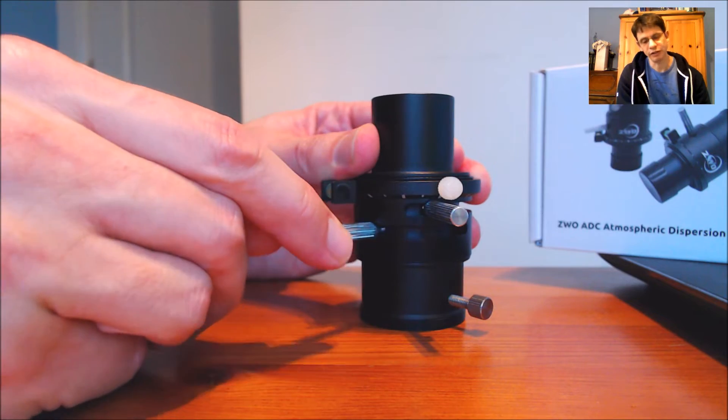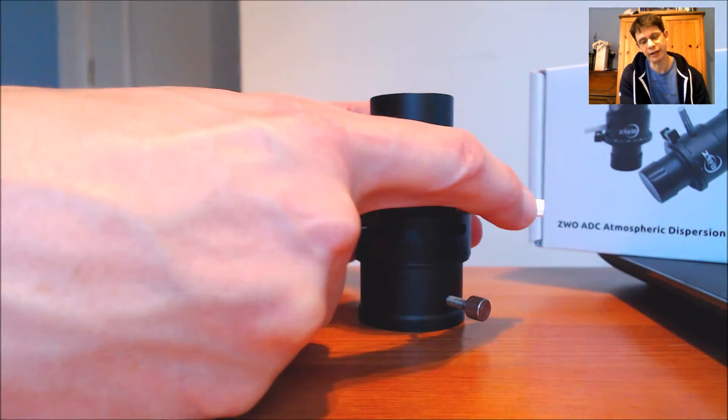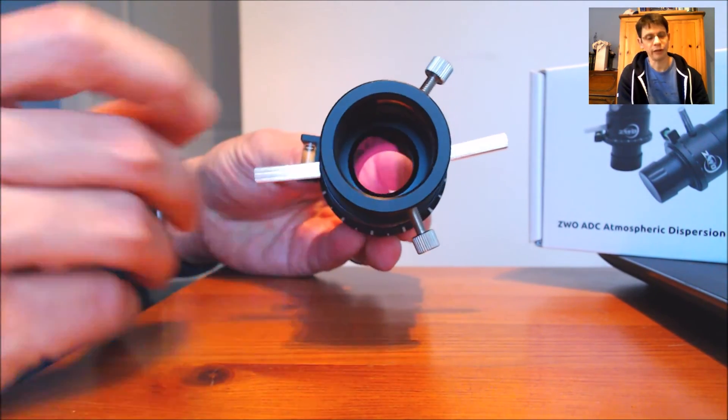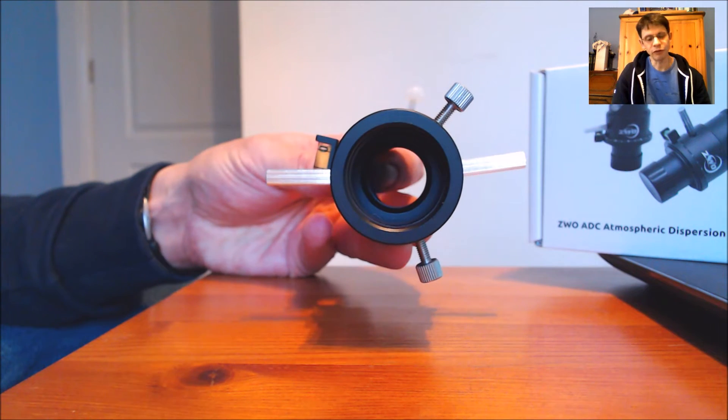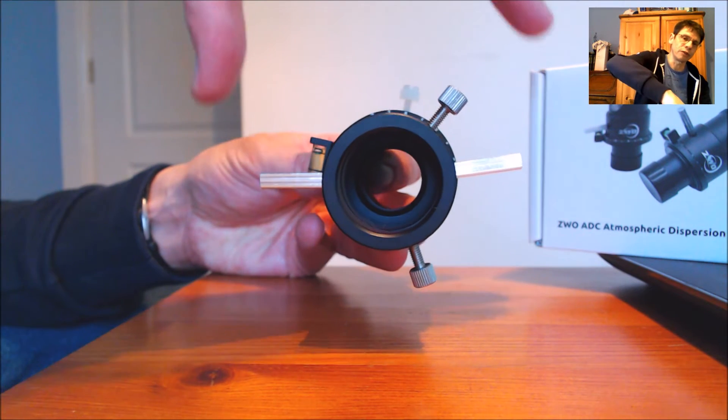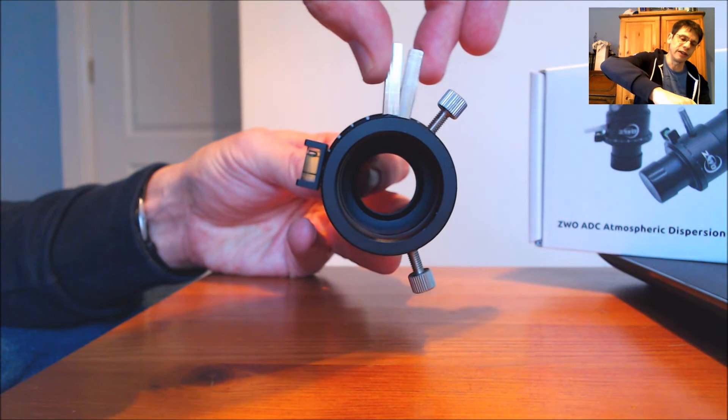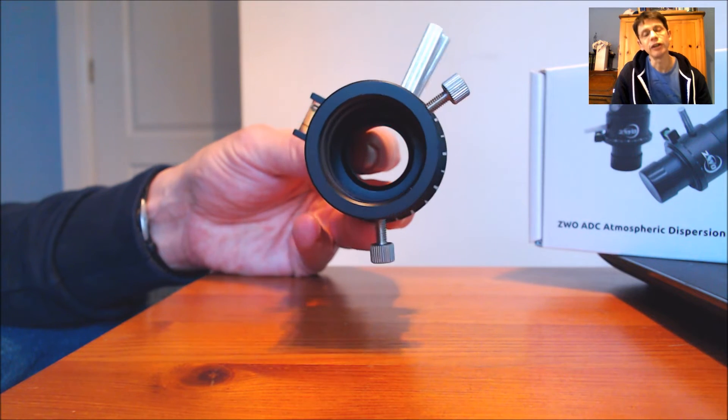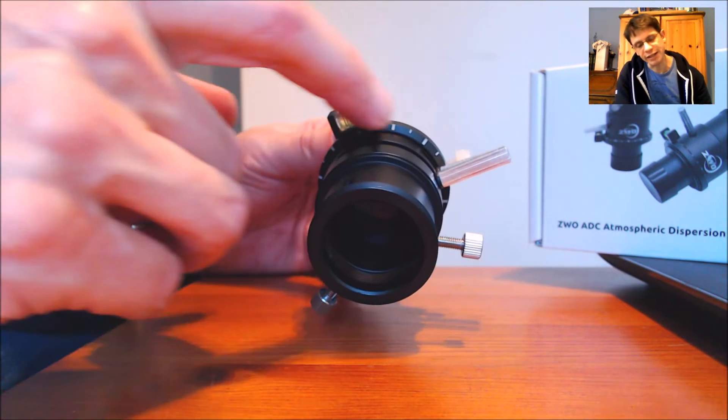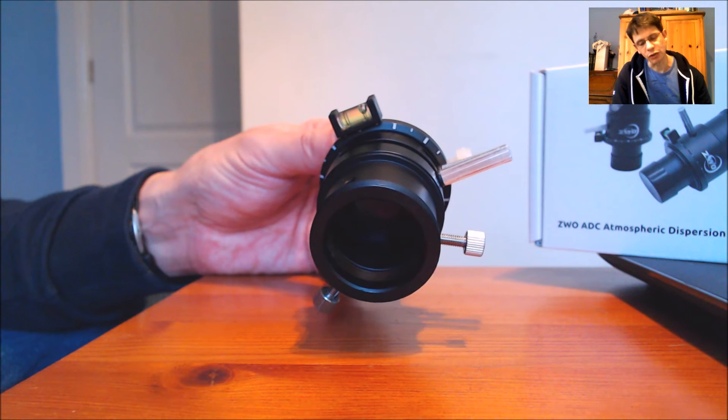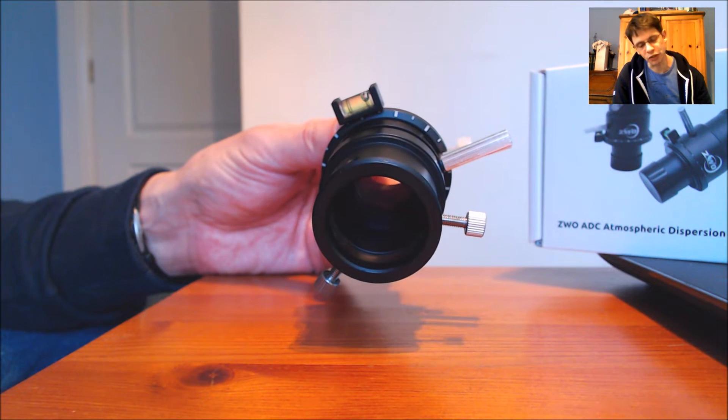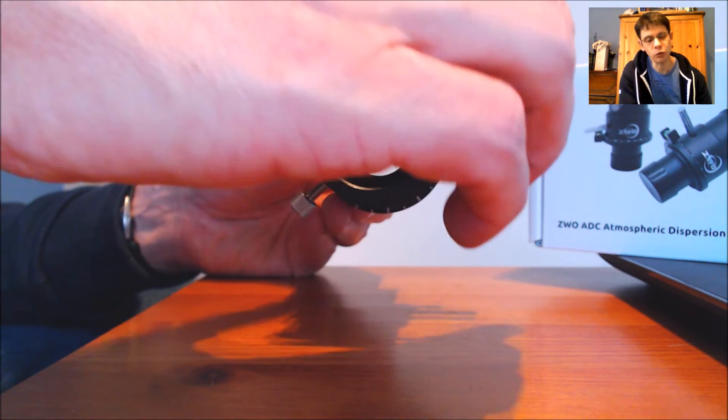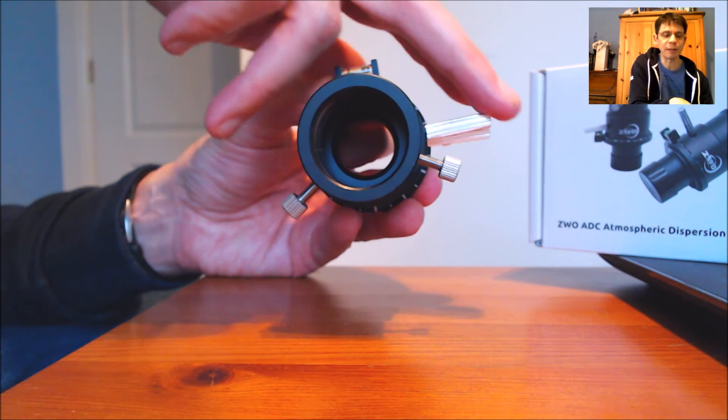So you have two levers that can be moved independently of each other. You can move them so that they're pointing completely different directions or you can bring them back to be in a datum position. On the side of the body of the unit you can see some graduations to allow you to reproduce a given position or to make sure that the two levers are adjusted symmetrically.